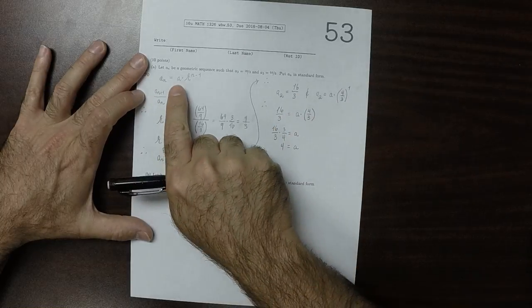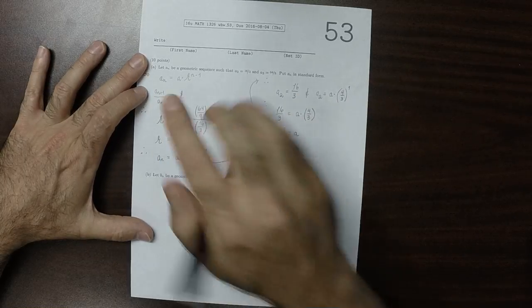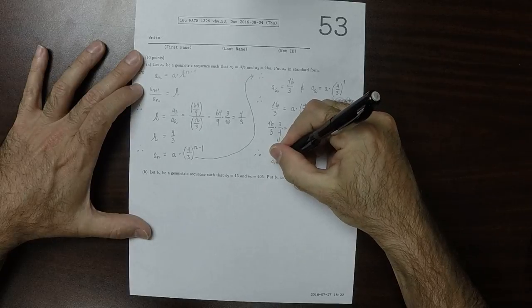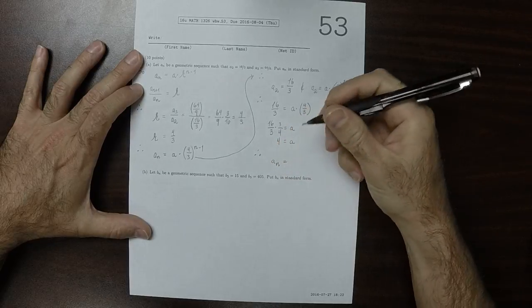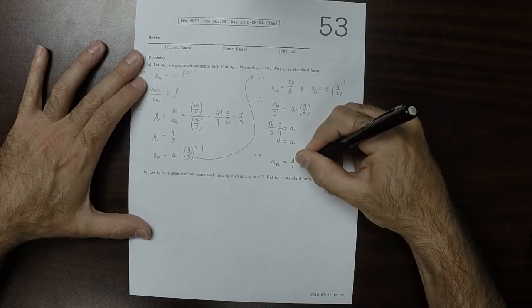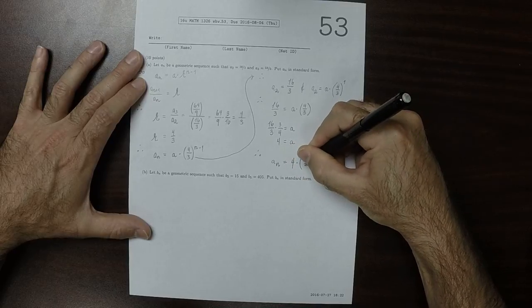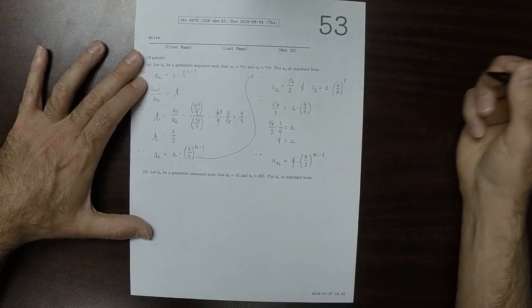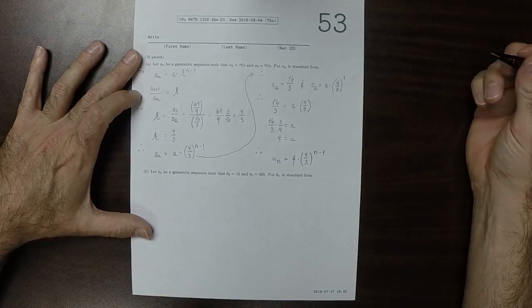And therefore, we have determined both a and r. So we know that the sequence a_n is 4 multiplied by 4 thirds to the power of n minus 1. That's the answer to part a.